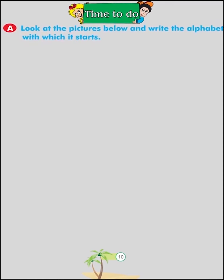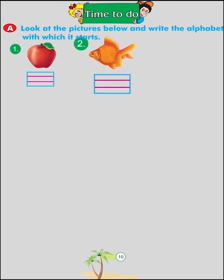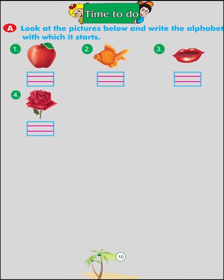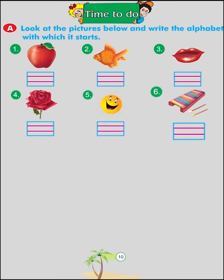Time to do. Look at the pictures below and write the alphabet with which it starts: A for Apple, F for Fish, L for Lips, R for Rose, S for Sun, X for Xylophone.